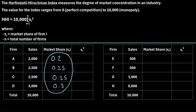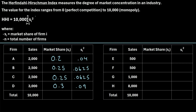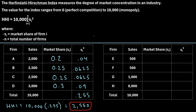The next step to calculating the HHI is to take these market share values and square them. So 0.2 squared comes out to 0.04; 0.25 squared comes out to 0.0625; we have 0.0625 again for firm C; and 0.3 squared comes out to 0.09. We now take the sum of all these S sub i squared values, which turns out to be 0.255. The very last step is to multiply by 10,000, so HHI equals 10,000 times 0.255, which comes out to 2,550.